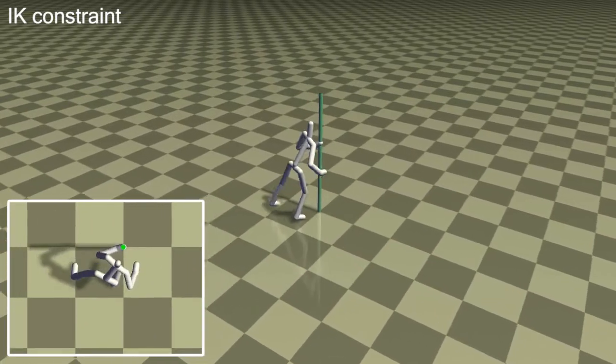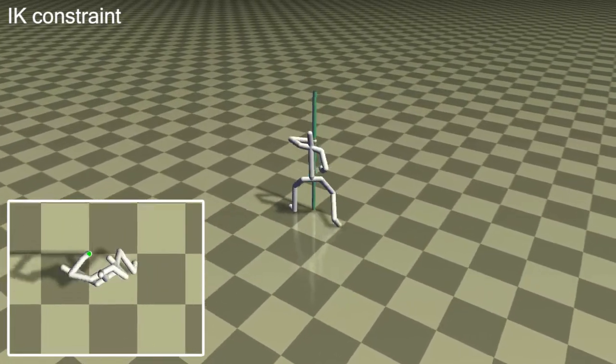Constraints can also alter the behavior. Here, the left hand is constrained to hold the pole. No additional motion data was used.